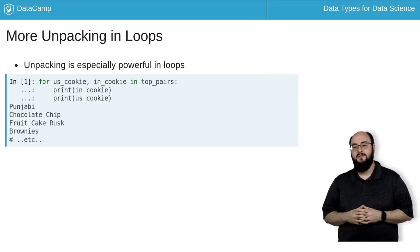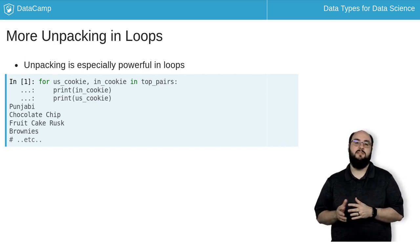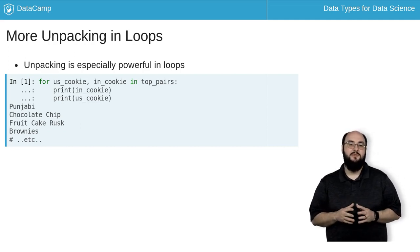Here I'm building a for loop that uses tuple unpacking when iterating over the top pairs list. It splits each tuple in the list into its Indian and US cookie elements. We then use each of these variables to print the cookies in order.